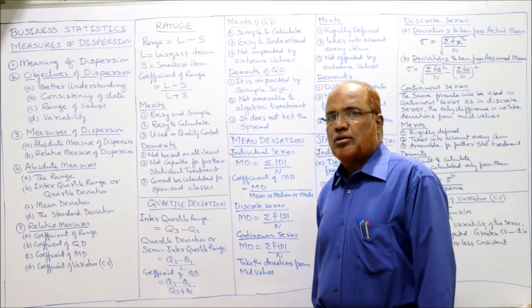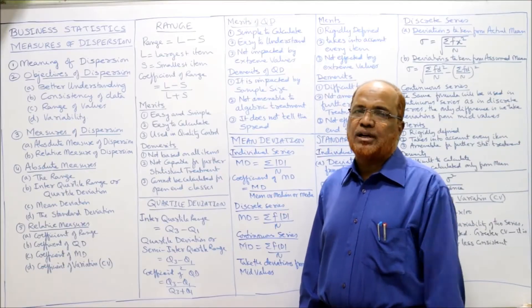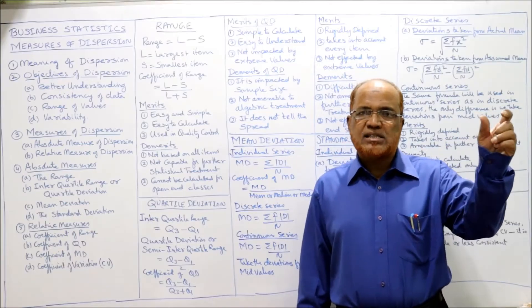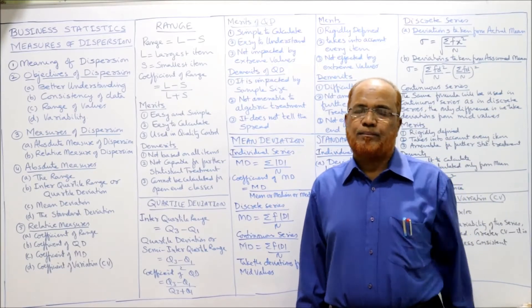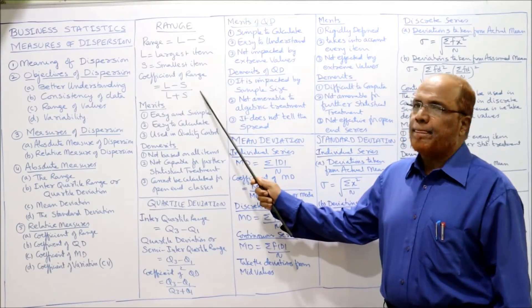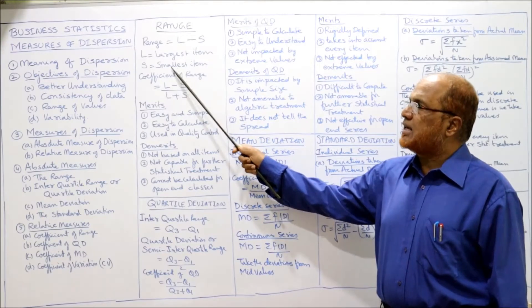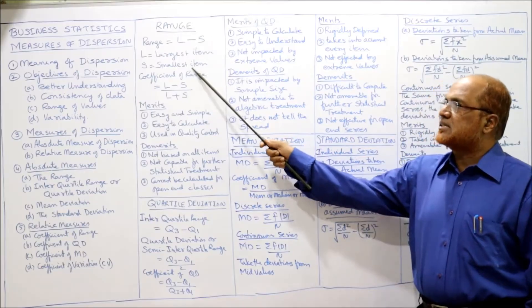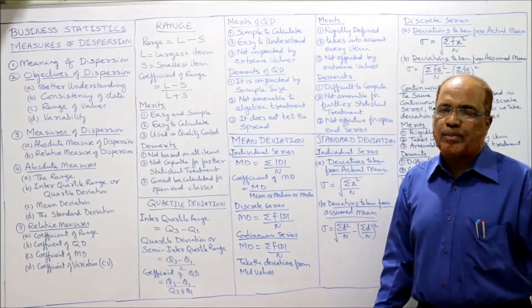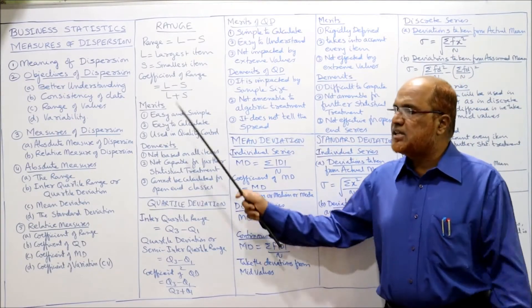The first technique is range. Range simply is the difference between the highest value and the lowest value in the given data. The formula for range is L minus S, where L stands for the largest item and S stands for the smallest item. So L minus S equals range. The coefficient of range is L minus S divided by L plus S. Range is a very simple technique for calculating the measure of dispersion.